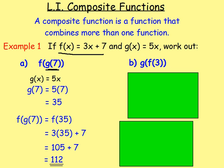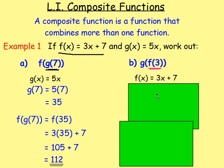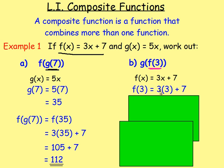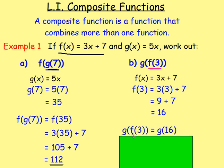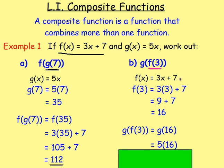Next example: g(f(3)). Again, start in the middle and work out f(3). Function f(x) = 3x + 7, so f(3) means replacing x with 3: 3 times 3 plus 7 = 9 + 7 = 16. Now we know f(3) = 16, so we work out g(16). Function g(x) = 5x, so replacing x with 16 gives 5 times 16, which is 80. That is your answer.